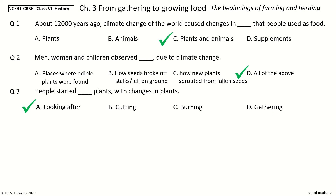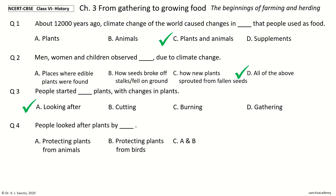Question 4. People looked after plants by doing what. The options are: protecting plants from animals; protecting plants from birds; A and B; cutting them. And the answer is A and B.